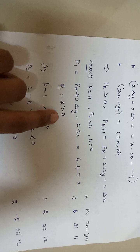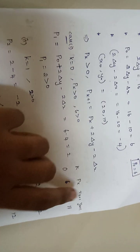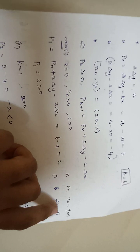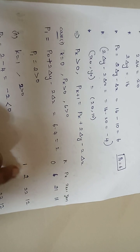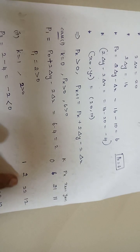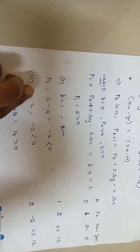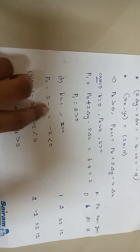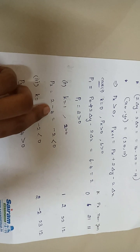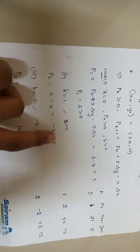For k=1, Pk = 2, which is greater than 0. Using the formula Pk+1 = Pk + 2Δy minus 2Δx: 2 + (minus 4) = minus 2. Since Pk+1 = minus 2 is less than 0, only x is increased, not y. So the next point is (23, 12). For k=2, Pk = minus 2, which is less than 0, so use the formula Pk+1 = Pk + 2Δy: minus 2 + 16 = 14.